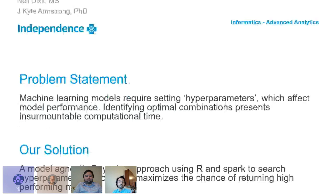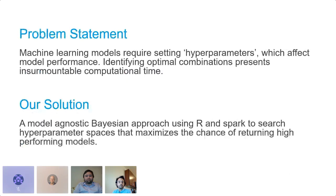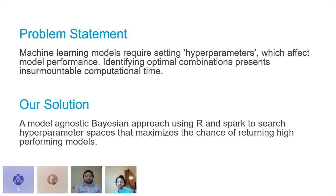Machine learning models offer an amazing opportunity to learn complex relations from data. Many of these models require setting non-learned parameters known as hyperparameters. It's been shown that these can greatly affect model performance, but even for the simplest models, finding an optimal solution can be intractable. At Independence, we want to ensure these settings are optimally chosen across various projects and models. We created a model-agnostic Bayesian approach using R and Spark to search hyperparameter spaces.